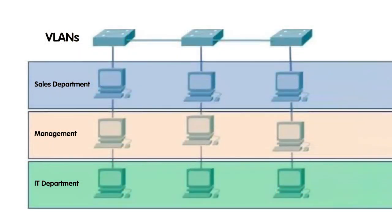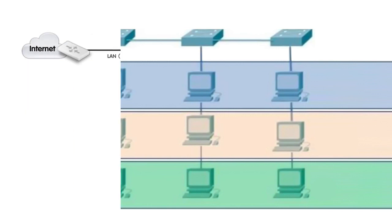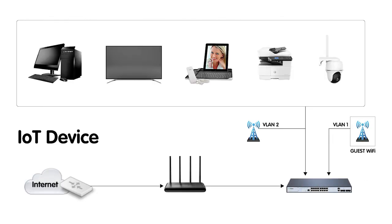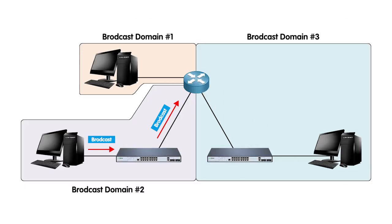VLANs offer a wide range of benefits for modern network infrastructure. First, departmental segmentation: organizations can logically group devices based on department and functional teams, enabling each department's traffic to remain isolated from others, promoting efficient resource management. Next is guest network isolation — by implementing VLANs for guest Wi-Fi access, businesses can create a separate network for visitors without granting access to sensitive internal resources. VLANs also facilitate IoT device segregation and contribute to broadcast domain reduction for better device management and optimized network performance.